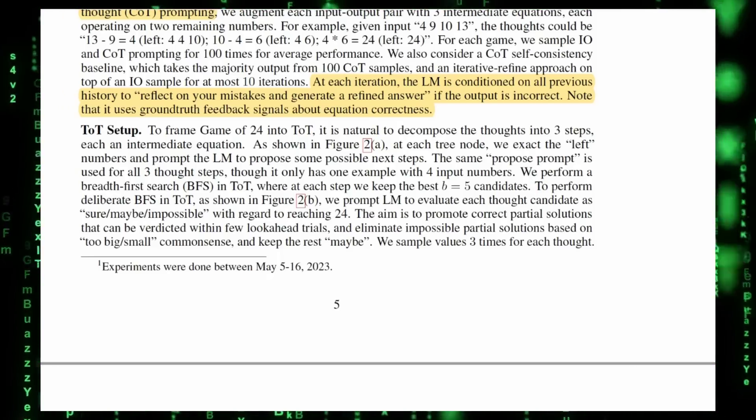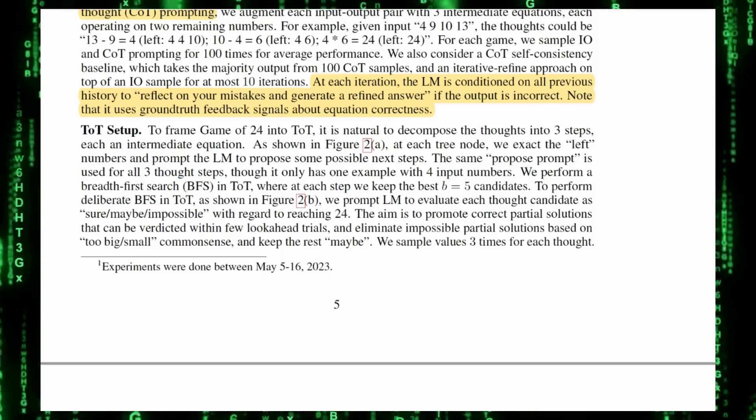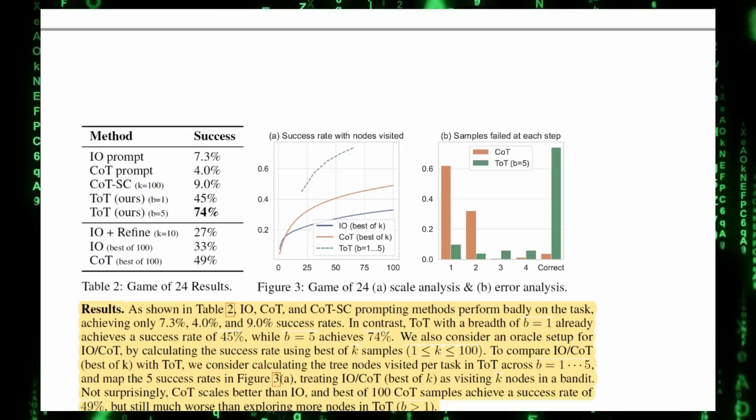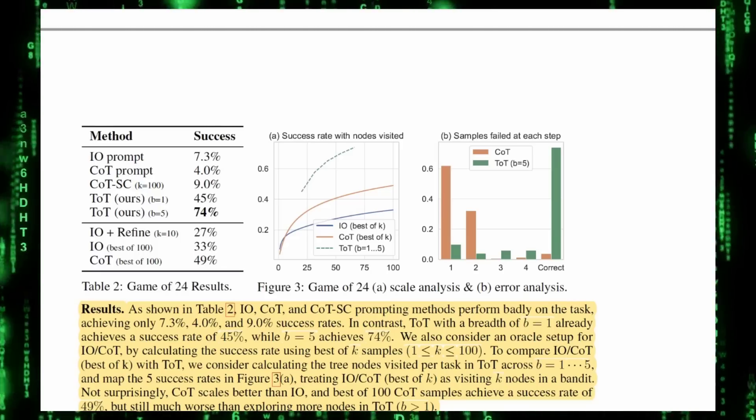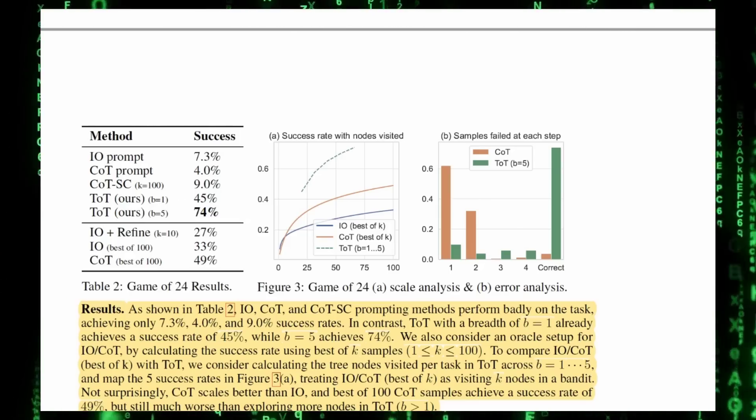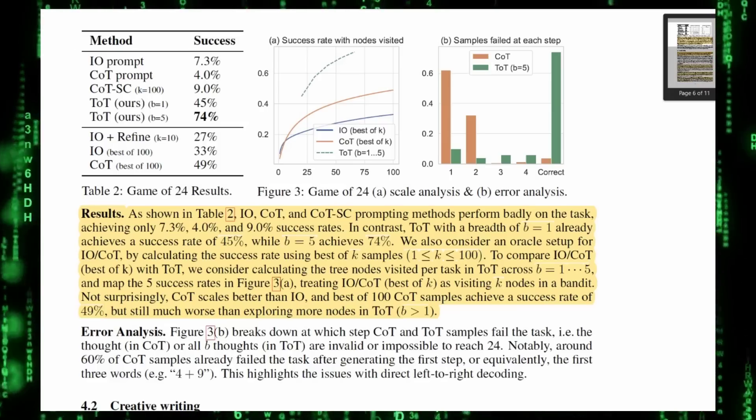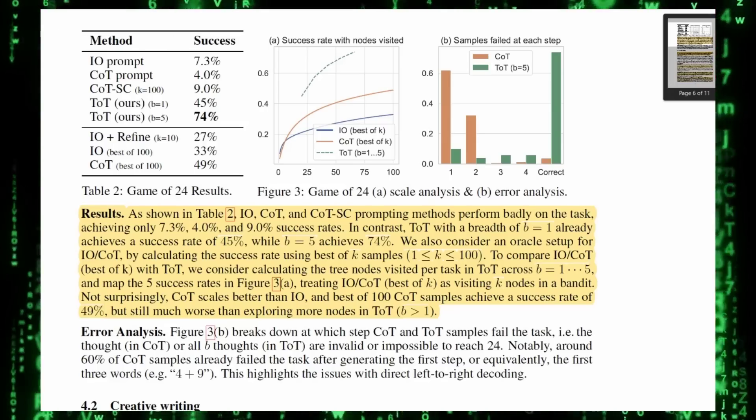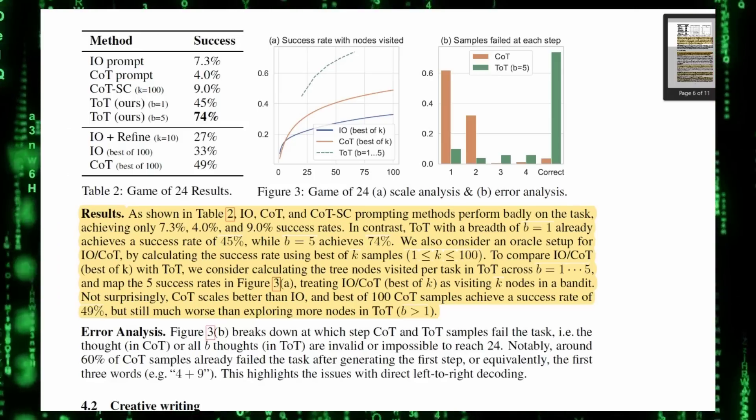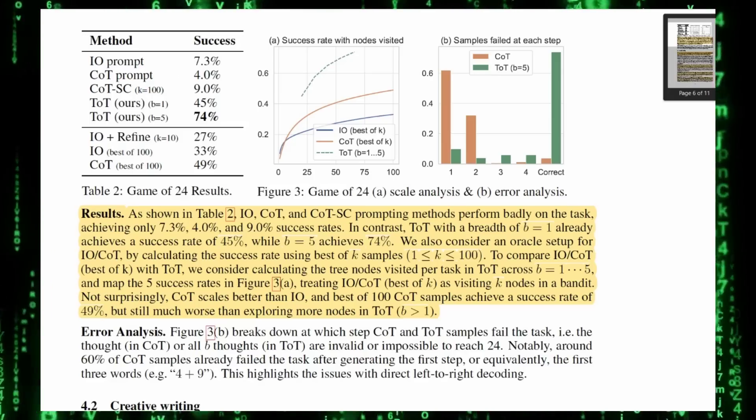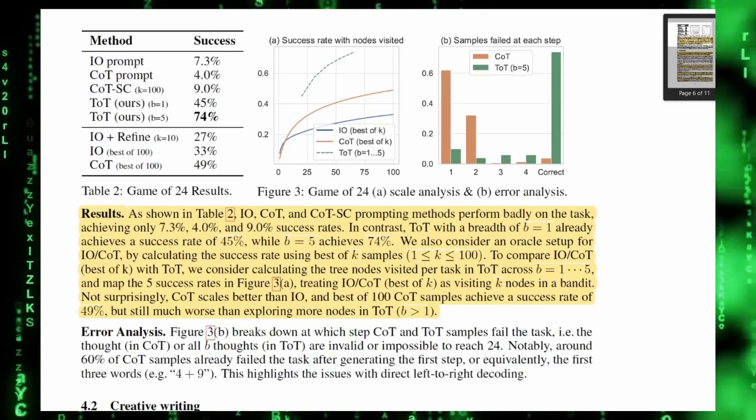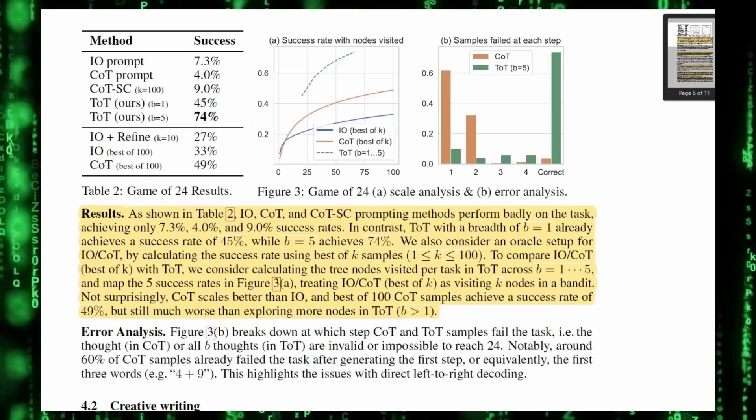In the breadth-first approach, they expand a number of starting points before going deeper. Here in the results, the lowercase b here refers to breadth, or how many columns they decide to go before digging deeper. And so here are the results. The basic input-output IO prompt is 7.3. Chain of thought is 4%. Then they use the oracle setup with k equals 100 samples. In simpler terms, they're testing how well this works by trying it many times, up to 100, and then taking the best results to evaluate its performance in the most favorable conditions. So it's basically running it a bunch of times, seeing the best outputs. So that comes out with 9% success rate.